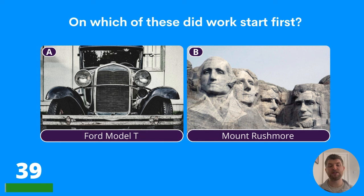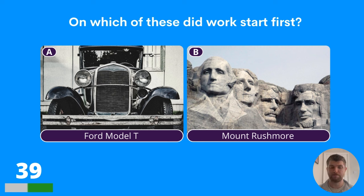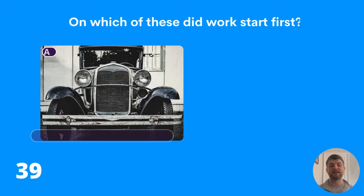Question thirty-nine: on which of these did work start first — the Ford Model T or Mount Rushmore? The answer is A, the Ford Model T.